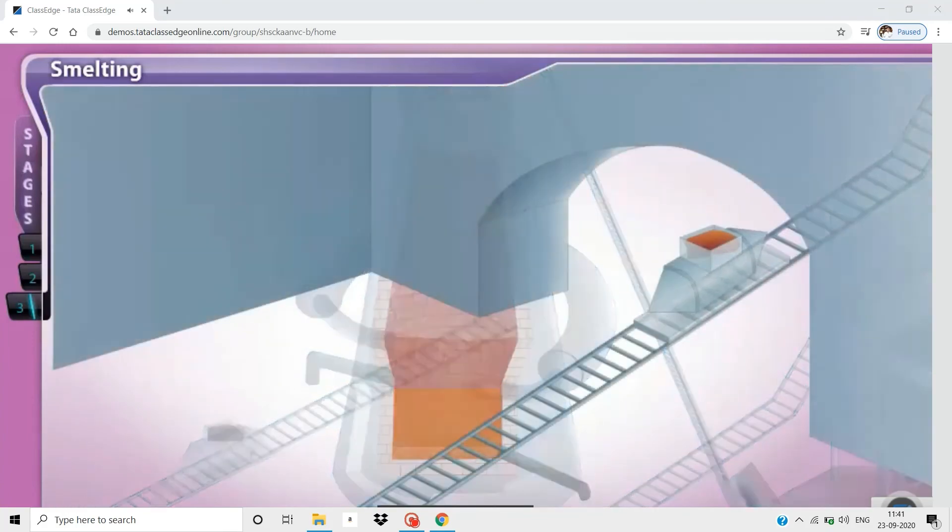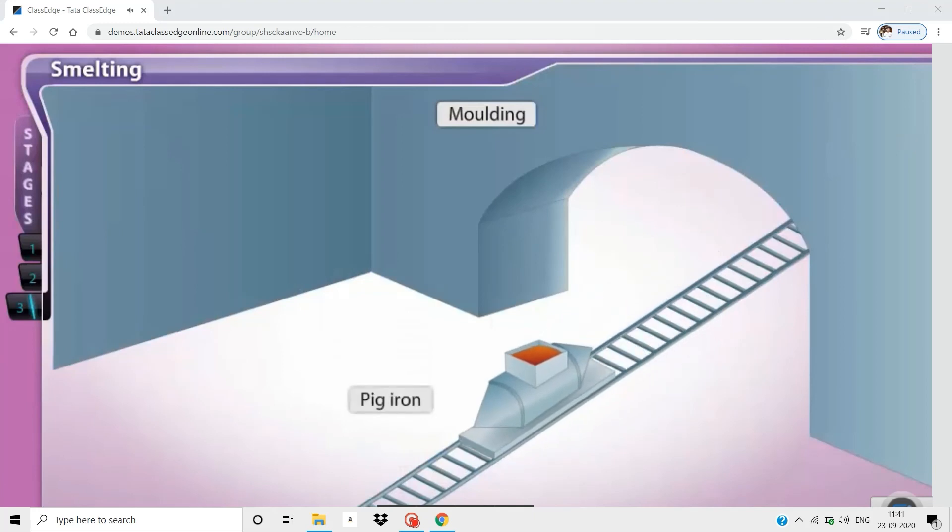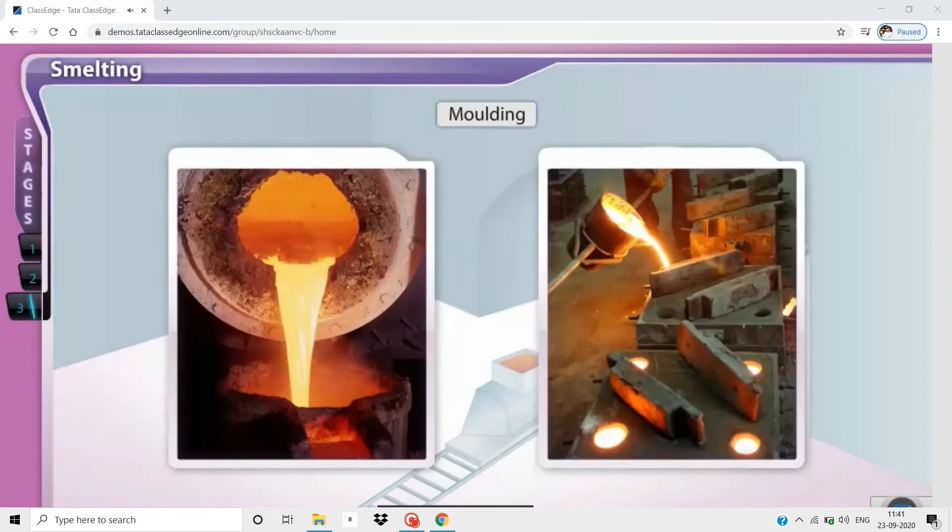The molten iron obtained is called pig iron. It is solidified in sand molds and cast into various shapes.